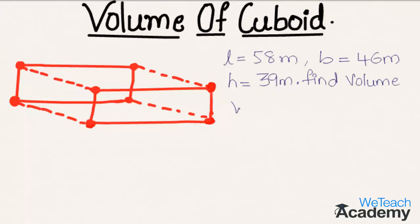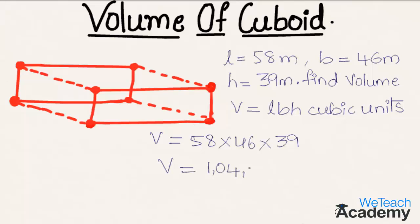We already know that volume of a cuboid is given by multiplying length, breadth and height. The formula is V = l × b × h cubic units. Substituting the values, we get V = 58 × 46 × 39. The product of these numbers is 104,052 meters cube.